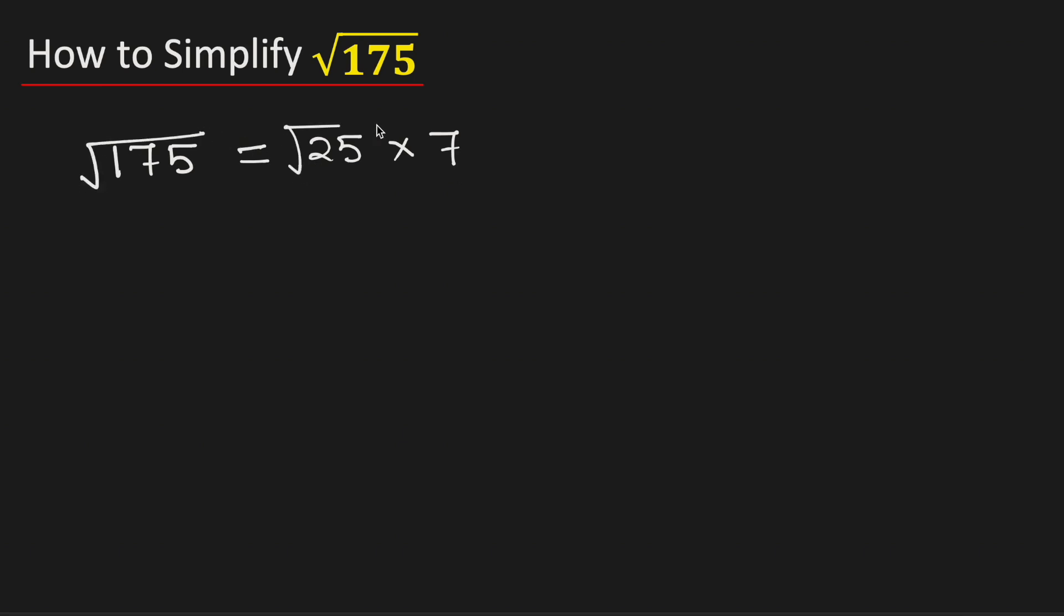Now take the square root on both sides and we know that this can be rewritten as square root of 25 times square root of 7.